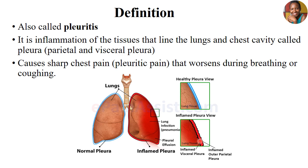The pleura is two-sided: it has the visceral side, which is the one touching the lung tissue, and the parietal side, which touches the chest wall. In between the visceral and the parietal pleura, we have a space called the pleural space. In the pleural space there is a thin lining of mucus that reduces friction and allows easy movement of the two walls during breathing in and out.